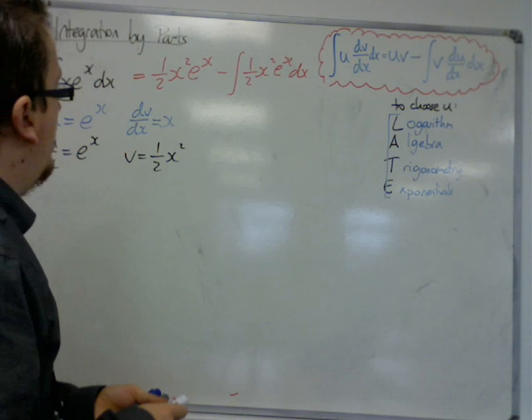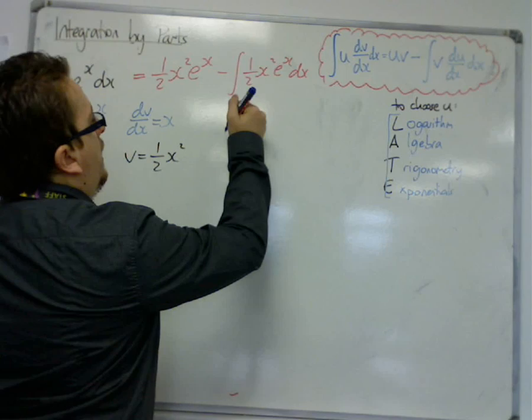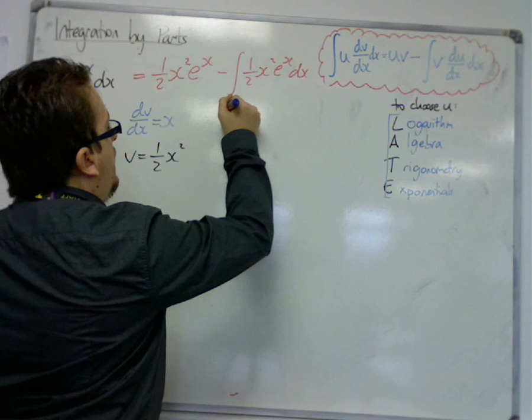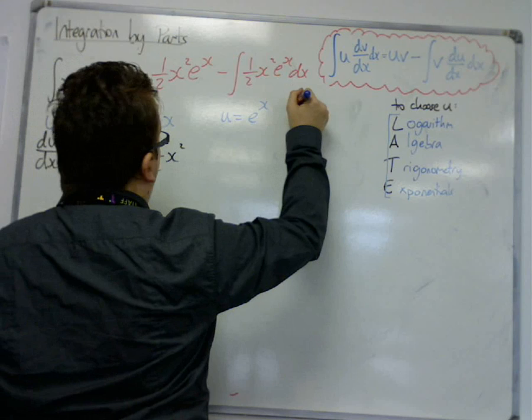However, I now have to integrate this. And in order to do that, I'm going to have to use integration by parts. Because it's a product of two functions, where this time I'm going to have my u as well, it's that e to the x. I'm going to make the same mistake again.